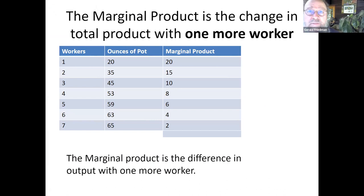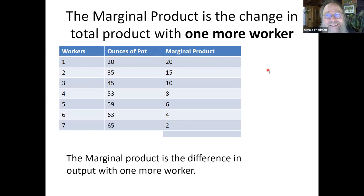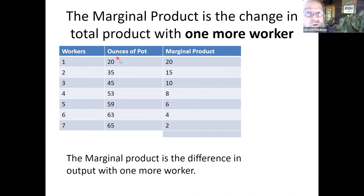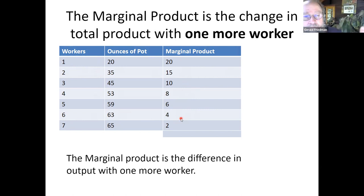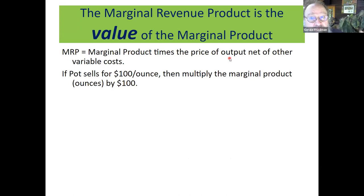You're a smart business person and you have a spreadsheet. Workers, additional workers, total amount of pots produced. Marginal product of pot is the change in output you get from additional workers. It is downward sloping because additional workers have less and less with which to work. Marginal revenue product is the price of output net of other variable costs — keep that in mind.